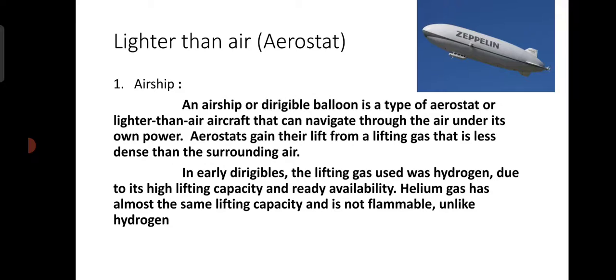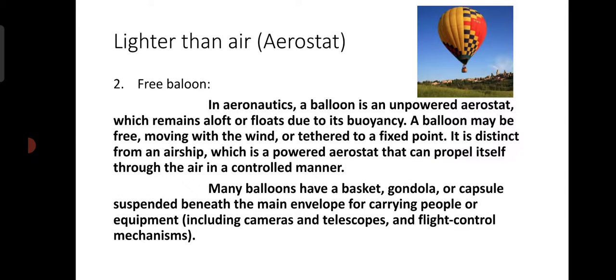In without engine, there are two types: glider and sailplane, and kite. Now, our first topic is airship. An airship or dirigible balloon is a type of aerostat, or lighter than air aircraft, that can navigate through the air under its own power. Aerostats gain their lift from a lifting gas that is less dense than the surrounding air. These airships are filled with a gas lighter than the surrounding air, which gives the airship uplift.